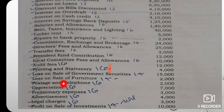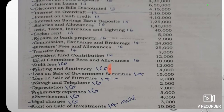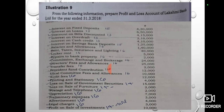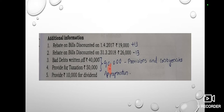Loss on Sale of Government Securities is Schedule 15. Loss on Sale of Furniture is 15. Posterage, Depreciation, Advertisements, Legal Charges. Profit on Sale of Investments. Now we have a few adjustments.